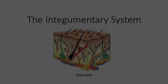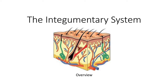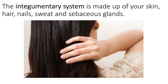Let's talk about the integumentary system. The integumentary system consists of your skin, your hair, and your nails. All of those structures provide protection. The skin is composed of subdivisions and layers. The top layer of your skin is called the epidermis.